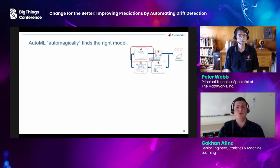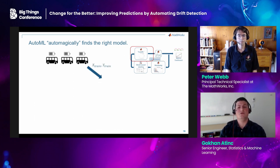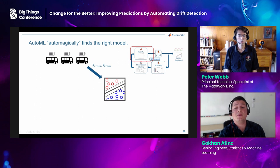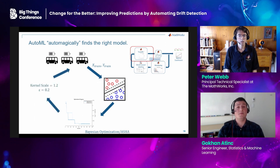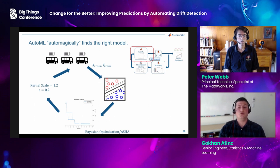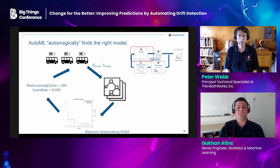Let us have a bird's-eye view of how AutoML operates. Starting with the training data, AutoML first selects a machine learning algorithm, say a regression support vector machine. Using an optimization scheme, such as Bayesian optimization or the asynchronous successive halving algorithm, it finds the optimal set of hyperparameters for the given model, which in turn optimizes the desired metric. For our problem, you may consider this metric to be the cross-validation mean squared error — which should also tell you that our problem is a regression problem. This is done for other models and other hyperparameter options until the best model and set of hyperparameters are determined.